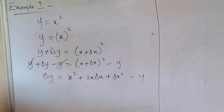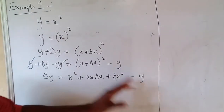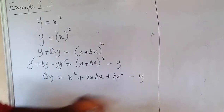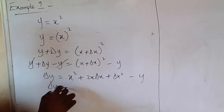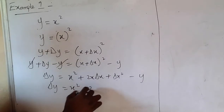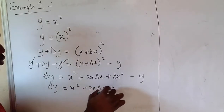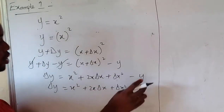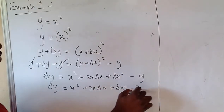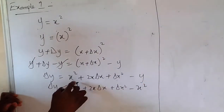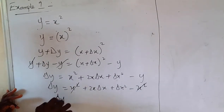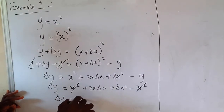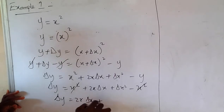Next, substitute the value of y from the question into the right-hand side. We get: δy equals x squared plus 2x·δx plus δx squared minus y. Since y equals x squared, that becomes δy equals x squared plus 2x·δx plus δx squared minus x squared. The x squared terms cancel, leaving δy equals 2x·δx plus δx squared.